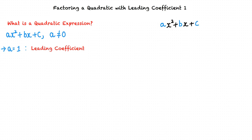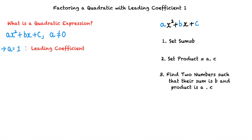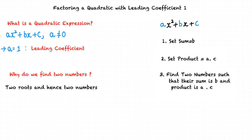Let us consider a quadratic expression of the form ax squared plus bx plus c. The first step is to set sum equals b. The next step is to set the product equals a times c. We then find two numbers such that their sum is b and their product is a times c. There are two roots to a quadratic expression, and hence we determine two numbers.